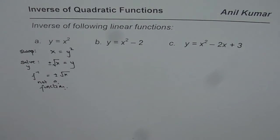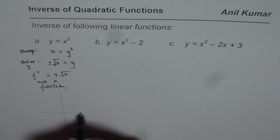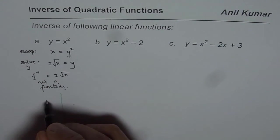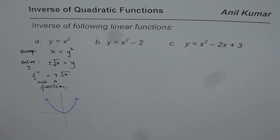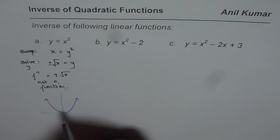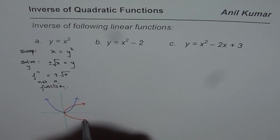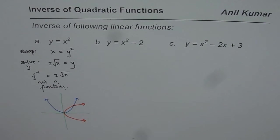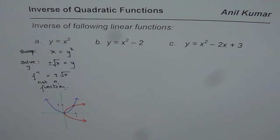You can also sketch it. y equals x squared is a parabola, and its inverse will be a square root function with positive and negative values. The point (1, 1) lies on the original parabola. That is how you get the inverse of y equals x squared.